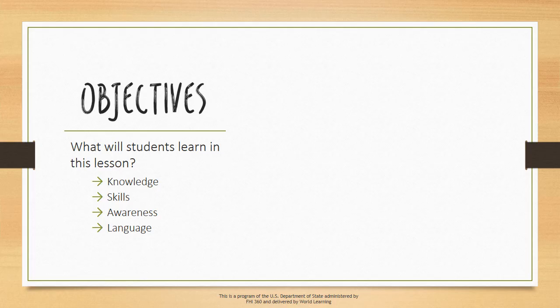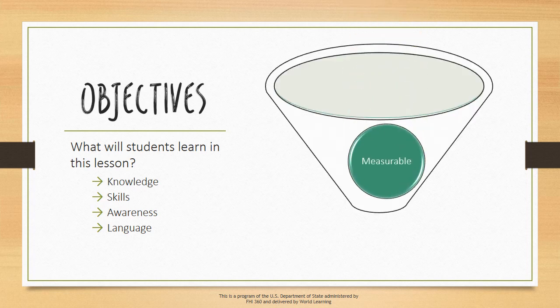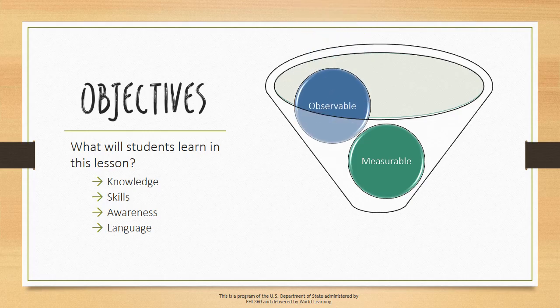In order to know if a lesson's objectives are reached, the objectives need to describe something that can be measured. Because of this, a lesson plan objective should describe behavior that can be observed. Good lesson plan objectives describe what students should be able to do after the lesson, not what they will know.